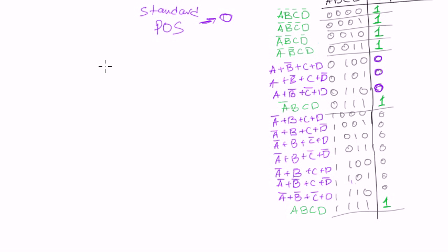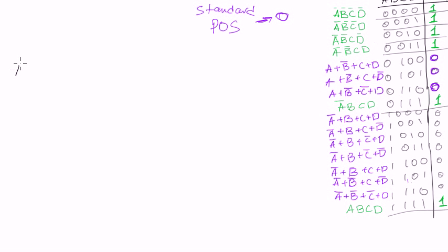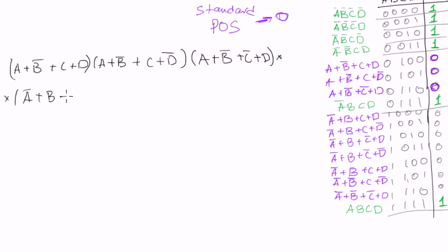Let's write it down. It will be: a plus b-negated plus c plus d, multiplied by a plus b-negated plus c plus d-negated, multiplied by a plus b-negated plus c-negated plus d, multiplied by a-negated plus b plus c-negated plus d-negated.